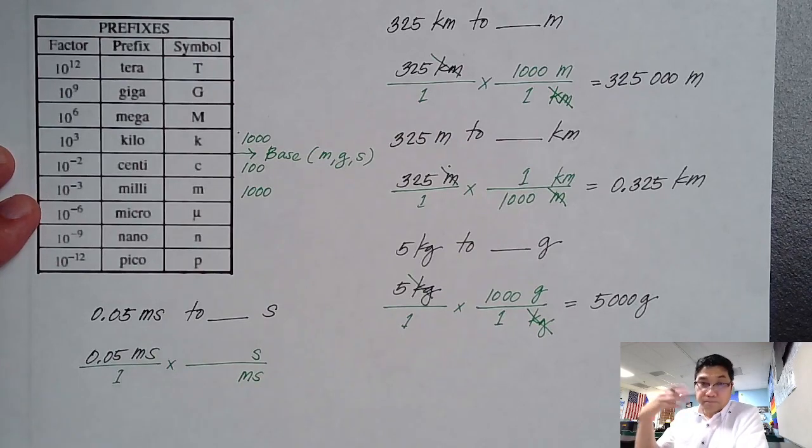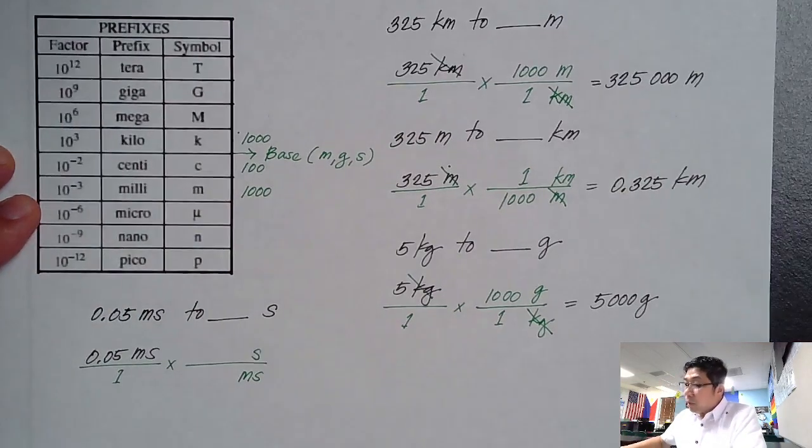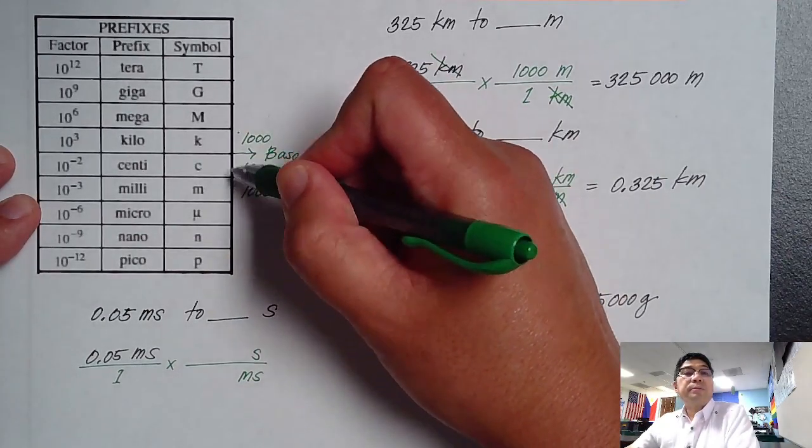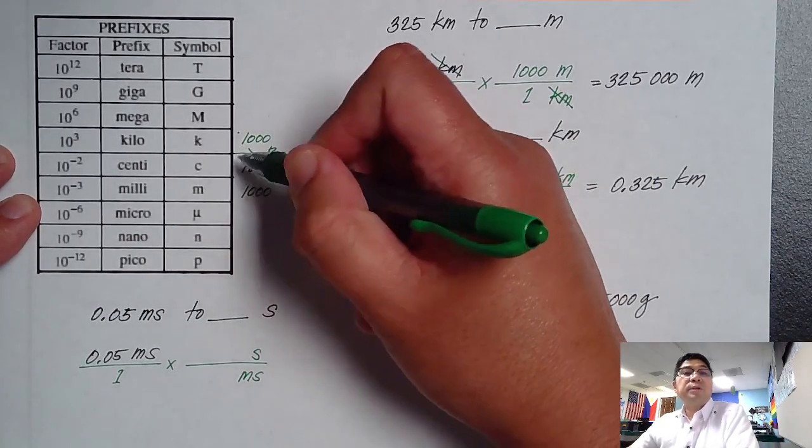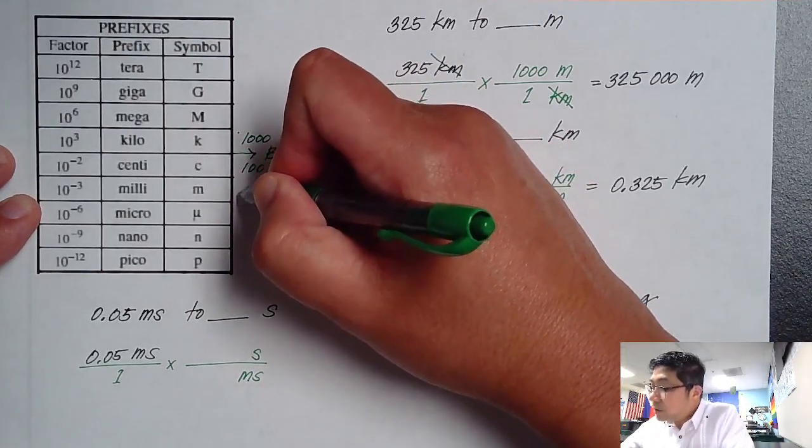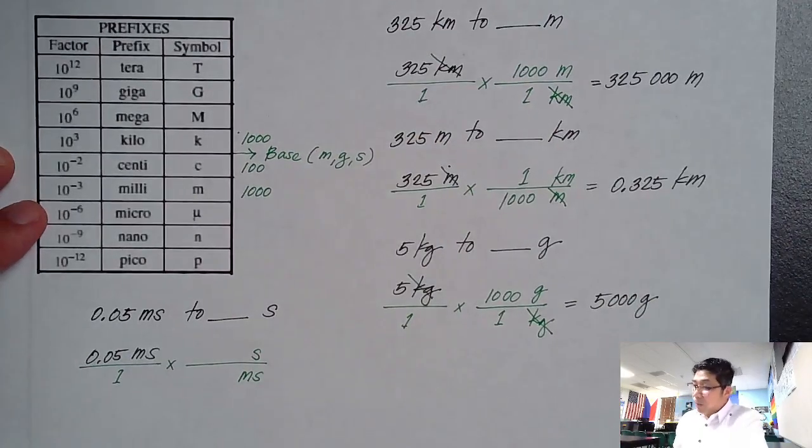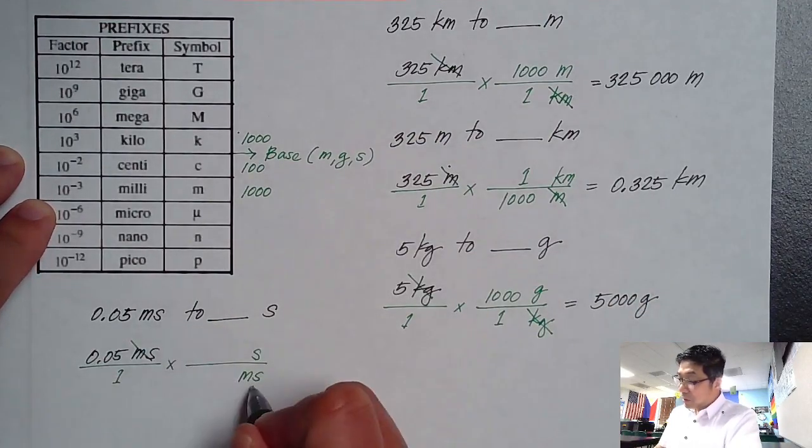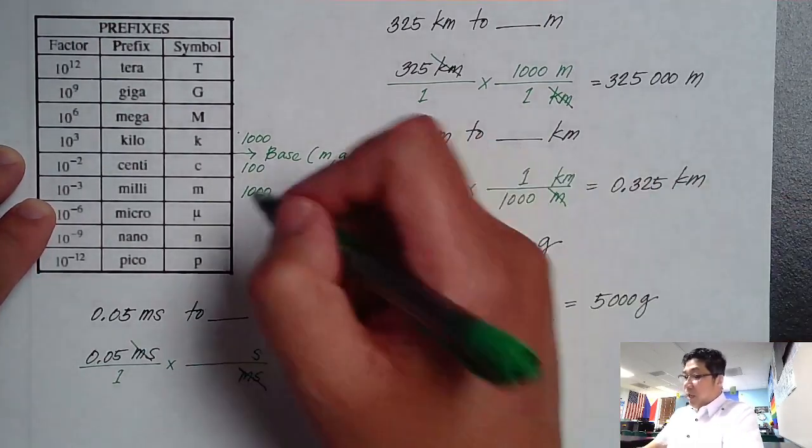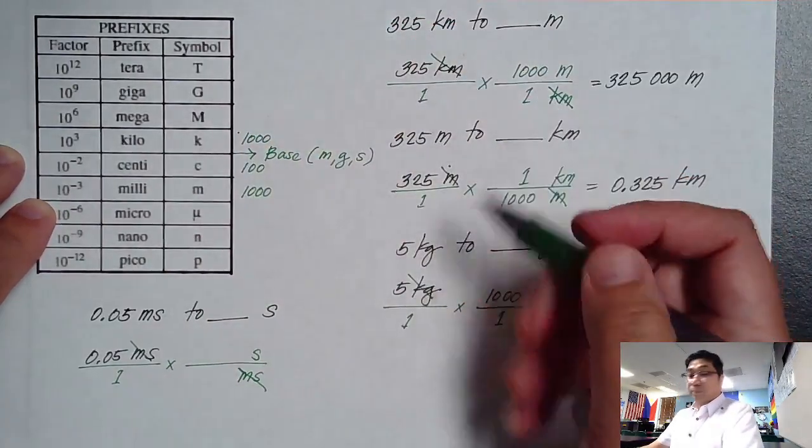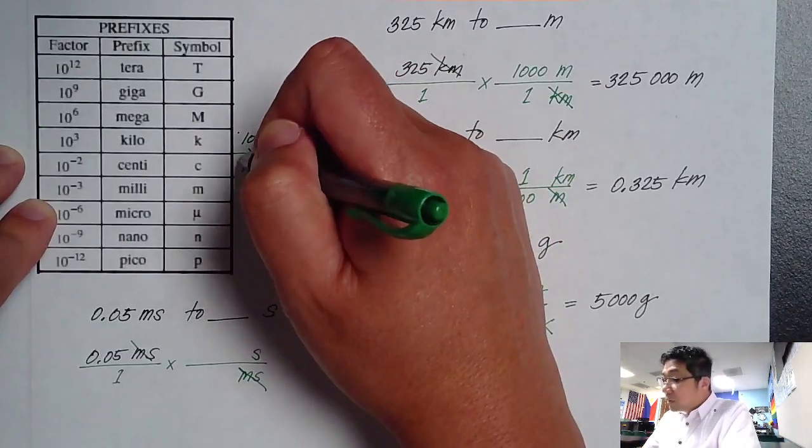Now let's take a look. So milli going to base, meaning you're going upward. So this time you're going upward. So meaning, is it getting smaller or getting bigger? That's a good question. Are we going to divide it or multiply it? But since you're going towards the base, from a small unit going to a bigger unit, which is your base, therefore we have to divide this.